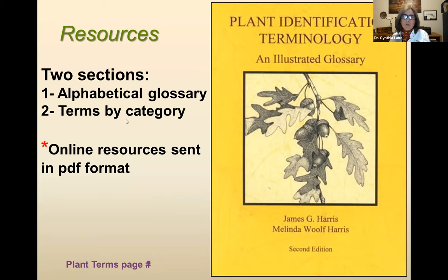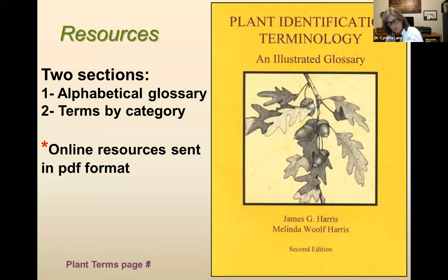The book also has terms organized by category — it'll have a whole category for leaf types, leaf margins, leaf shapes. So if you're in the botanical key and trying to figure out what they're referring to, you can go to that section, look at a bunch of different leaf types, and determine what the key is talking about. I did send online resources in a PDF format, so those of you that got the emails should have that, and I'll go over those at the end of this talk.